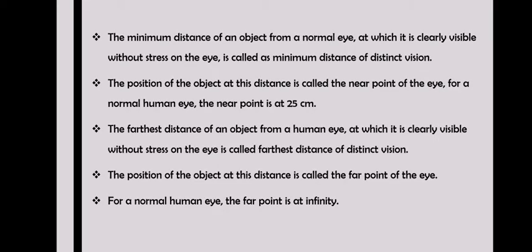The minimum distance of an object from a normal eye at which it is clearly visible without stress is called the minimum distance of distinct vision. The position of the object at this distance is called the near point of the eye. For a normal human eye, the near point is at 25 cm.